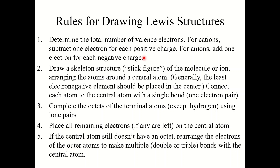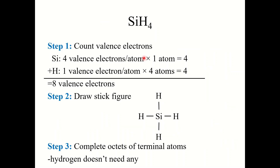Here is a list of five rules for drawing Lewis structures — I recommend you follow these rules and I'll go through example problems. Let's look at an example: silane, SiH₄. Step one: count the number of valence electrons available. You have one silicon atom with four valence electrons, so four electrons come from Si. You also have four hydrogen atoms each contributing one electron, so four more from H. That gives a total of eight valence electrons to work with.